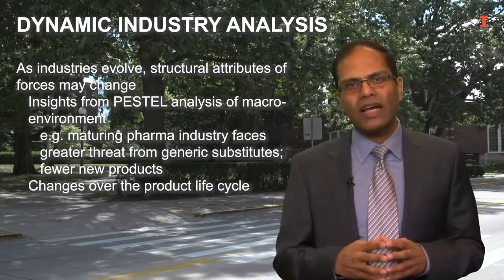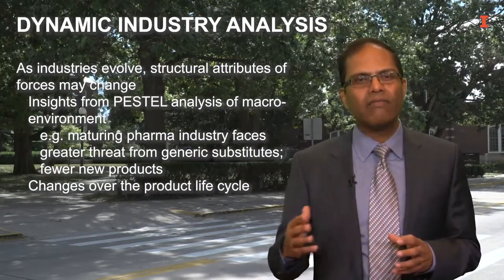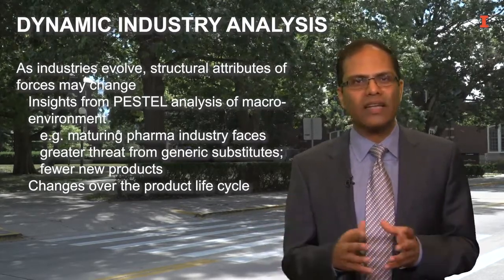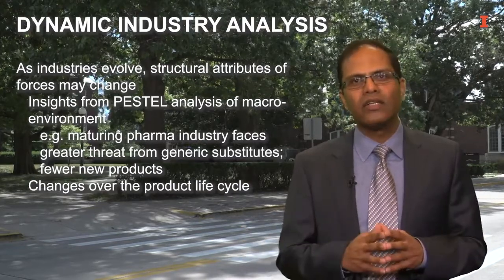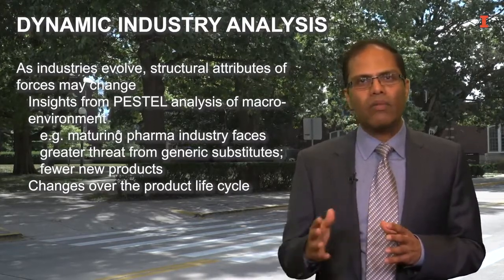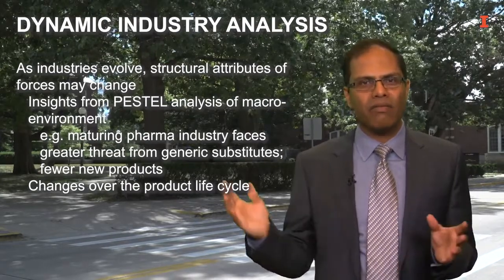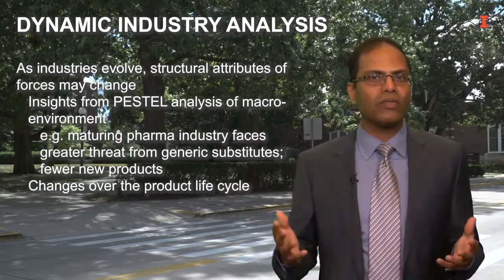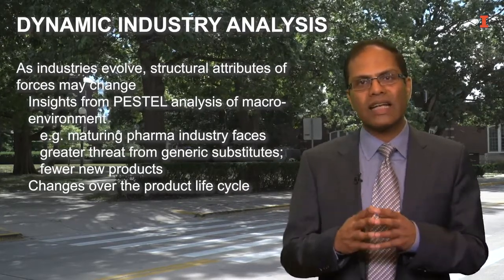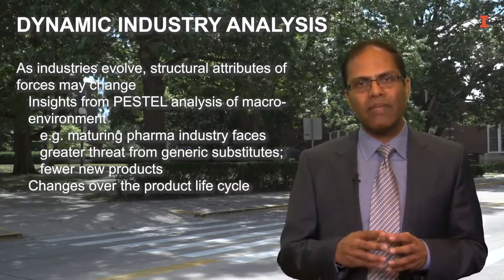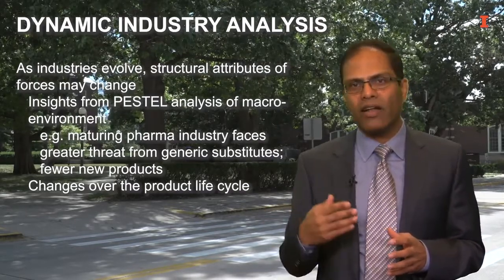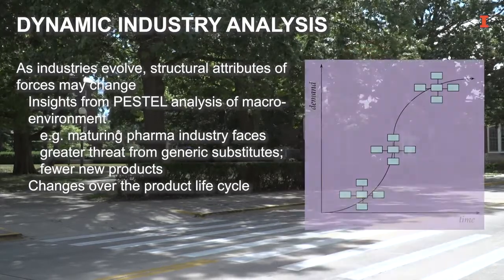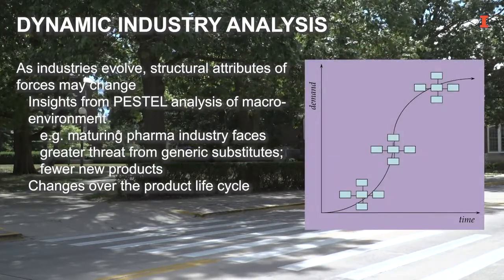We now turn our attention to understanding how to analyze industries as they evolve and change. Industry evolution and change can take many forms, and I highlight here two ways. One approach draws on an understanding of changes in the macro environment, say from utilizing the PESTEL framework. In pharmaceuticals, for example, an important legal and technological trend is that many important drugs are coming off patent and not being replaced by equivalently valuable new drugs.